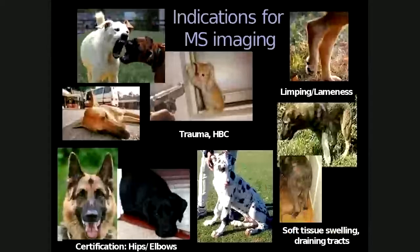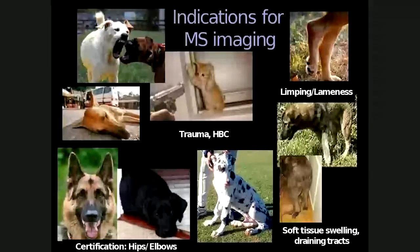There are many indications for imaging of the musculoskeletal system, including trauma such as hit by car or gunshot wounds, limping or lameness, soft tissue swelling, draining tracts, and certification purposes such as hip and elbow dysplasia.